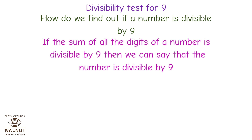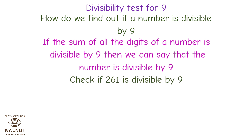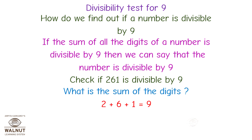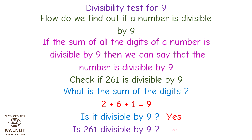Divisibility test for 9. How do we find out if a number is divisible by 9? If the sum of all the digits of a number is divisible by 9, then we can say that the number is divisible by 9. Check if 261 is divisible by 9. What is the sum of the digits? 2 plus 6 plus 1 is equal to 9. Is it divisible by 9? Yes! Therefore, 261 is divisible by 9.